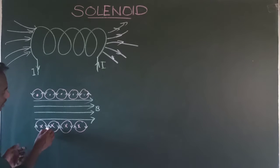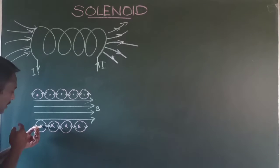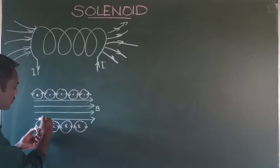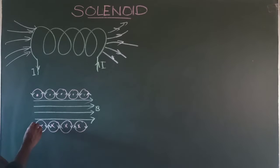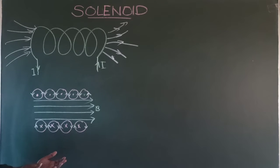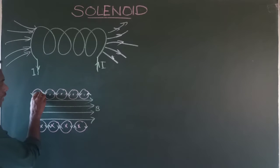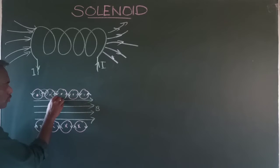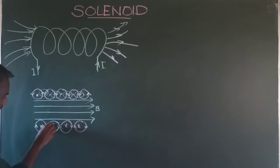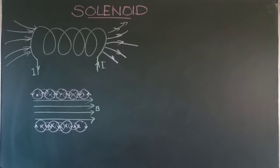Similarly, for the wire sections on the downside, the direction of electric current is in the inward direction. Applying the right-hand thumb rule, the direction of the magnetic field produced will be in the clockwise direction, perpendicular to the direction of electric current. The two neighboring sections of wire have magnetic fields in opposite directions, so they cancel each other. This cancellation applies to all adjacent pairs both on the upper and lower sides, making the effective magnetic field outside the solenoid almost equal to zero.